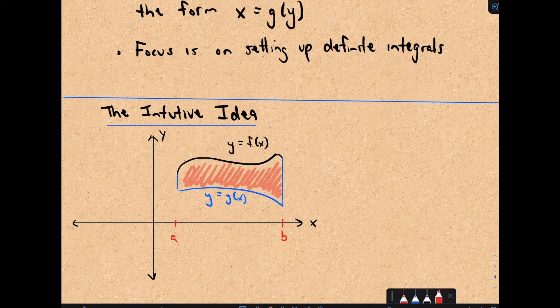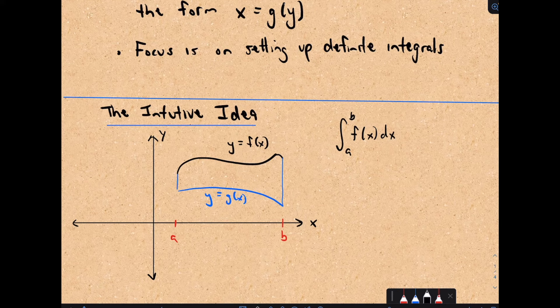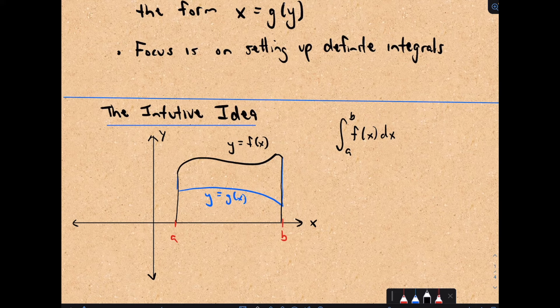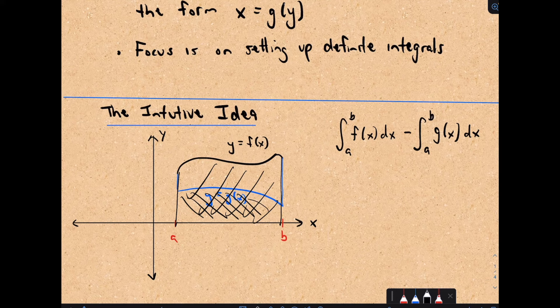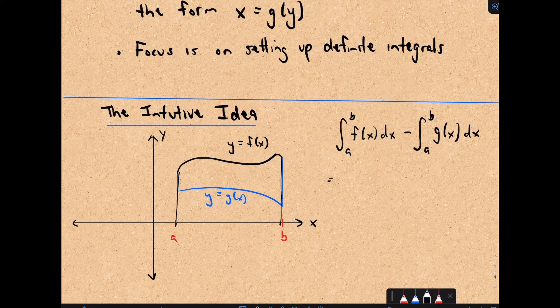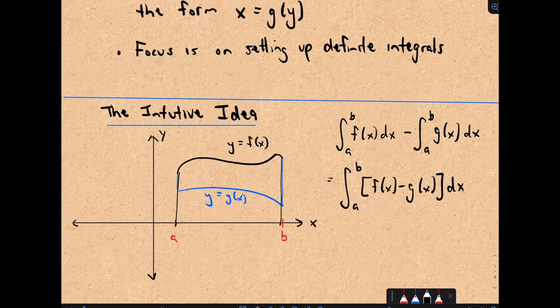Suppose we want to find this area trapped between two functions, y equals f of x and y equals g of x. If we computed the definite integral from a to b of f of x dx, that gives us the shaded area all the way down between the function and the x-axis, which is more than what we want. We can just subtract away the area bounded by g of x. So we combine this and say this is just the definite integral from a to b of f of x minus g of x. That is the formula — nothing geometrically too tricky to come up with.